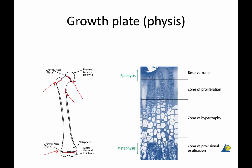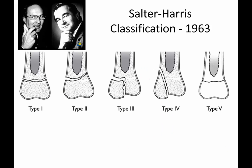The growth plate has four zones: a reserve zone, zone of proliferation, zone of hypertrophy, and zone of provisional ossification. You do need to know the Salter-Harris classification, the most commonly used classification for growth plate fractures. A type 1 fracture involves only the growth plate — the epiphysis may be displaced or separated, but there is no fracture into the epiphysis or up into the metaphysis.